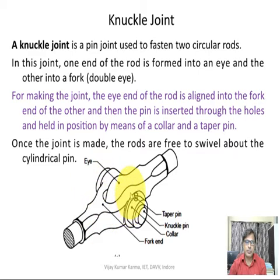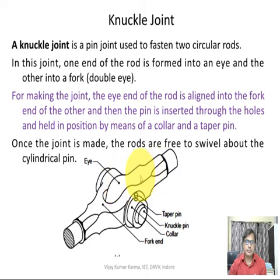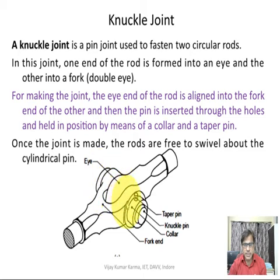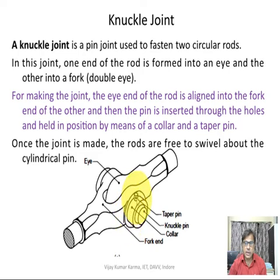Once the joint is made, the rods are free to swivel about the cylindrical pin. This is the socket end, this is one eye end, this is the other eye end — the single eye end of the other rod. This is the knuckle pin; these two are aligned and then this pin is inserted. The pin is held in its position by means of a collar and a taper pin.